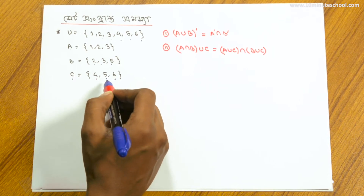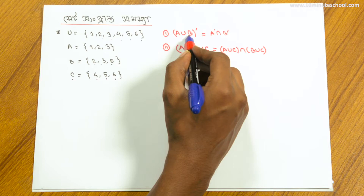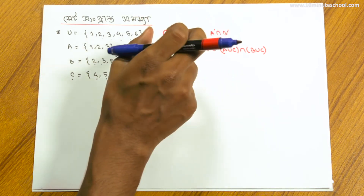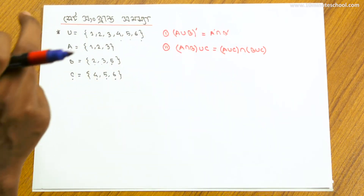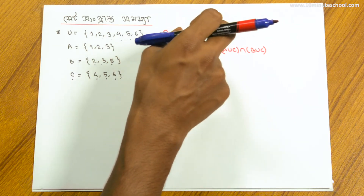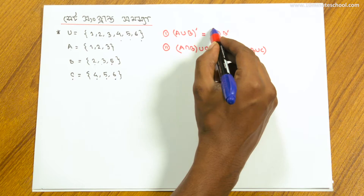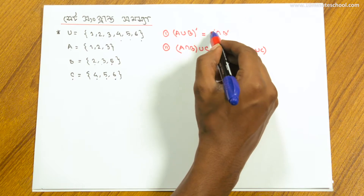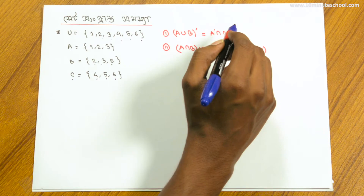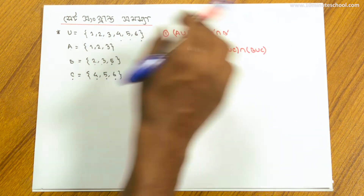Now we will do two kinds of things. First, A intersect B, and A complement, as well as A union B. The universal set is equal to A complement, or the universal set is equal to intersect B complement. Universal set is equal to A intersection.